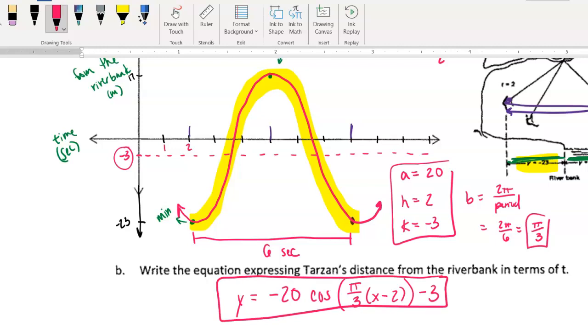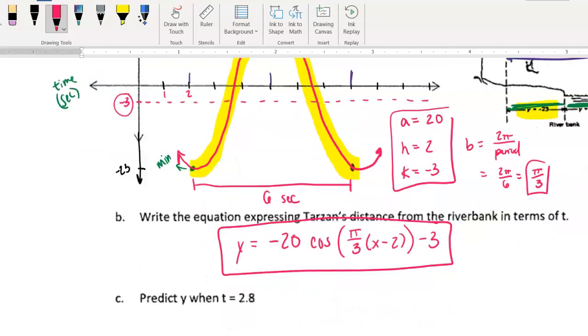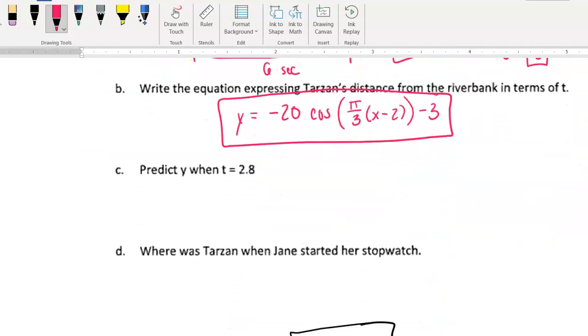That's a good job putting a box around it. But that's your equation that we're going to use now to answer these next couple of follow-up questions. So now it says predict Y when T equals 2.8. So if T is 2.8, well, in reality, we want to put T in here for X instead. That's fine. Use X or T. I really don't care. But now for this problem, we're going to replace X. We're going to replace T with 2.8.